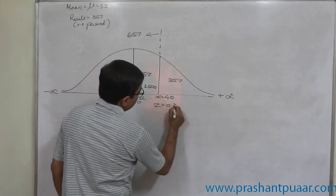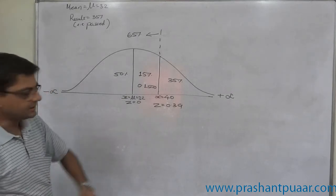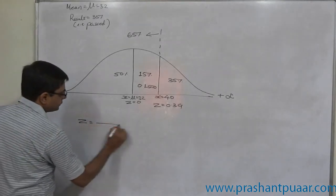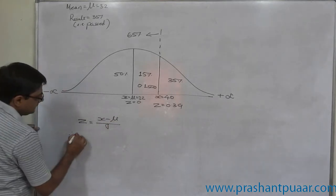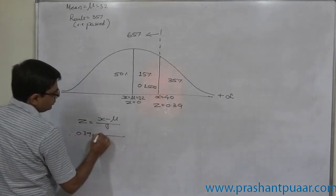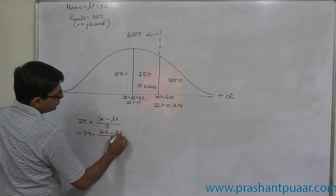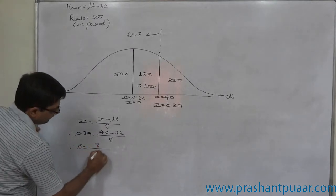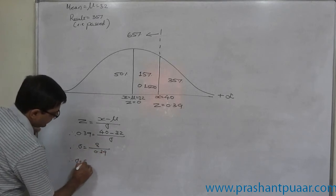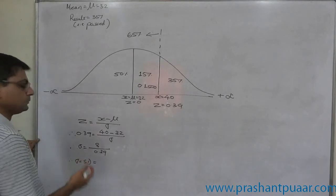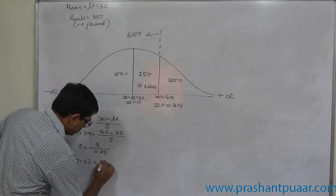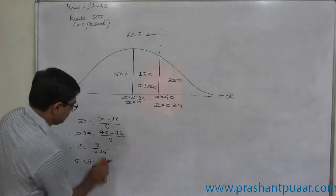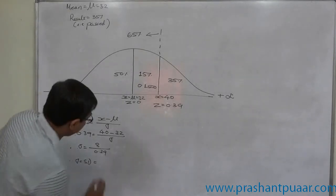Z equals 0.39, and it is positive because it is on the right-hand side area of the curve. Using the Z score formula: Z equals x minus mean divided by standard deviation. That means 0.39 equals 40 minus 32 divided by standard deviation. Therefore, standard deviation equals 8 divided by 0.39, which gives approximately 20.51.